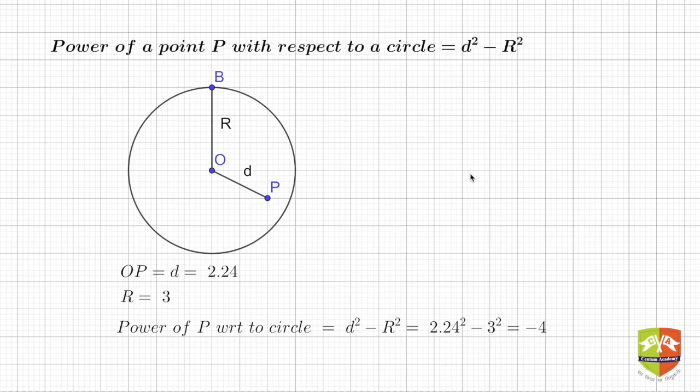Lots of theorems and properties around circles and tangents and non-concentric circles will be revolving around this particular property which is called power of point P with respect to circle. So P is any point on the plane of the circle.